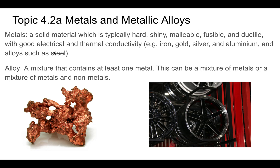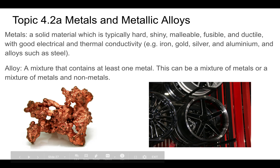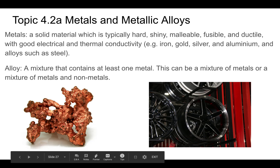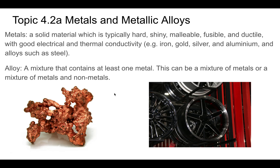Here are some examples of different metals. An alloy is basically a metal, but it also has some other metal or non-metal mixed in. Here's an example of an alloy — these are wheels for a car and they're going to be an alloy of something like aluminum, magnesium, and nickel. So it's a mixture of metals and non-metals — different types.